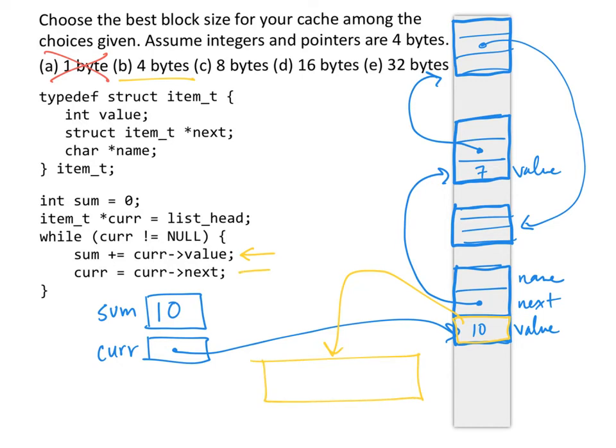Now when we encounter the next instruction asking for cur next, we would also incur a miss, and we would then have to bring these four bytes into the block, into the cache. So you'll notice that having a four byte block size in no way offers a nice prefetching effect for you. You missed when you tried to access value, and you missed again when you tried to access next.